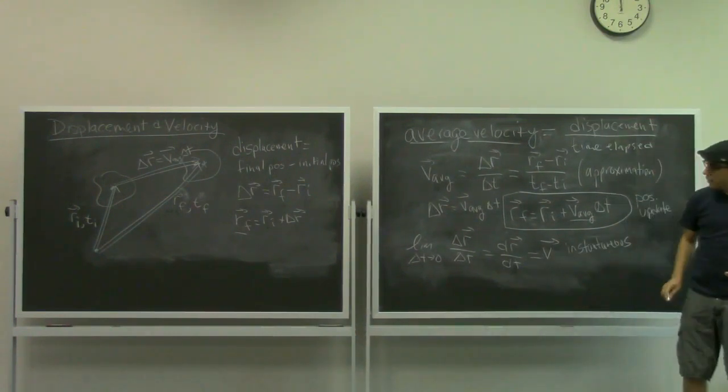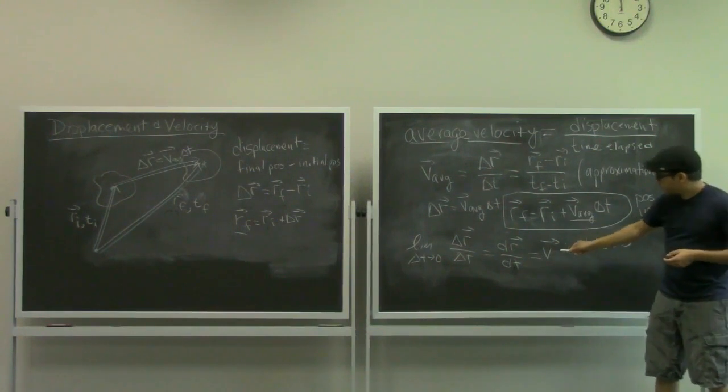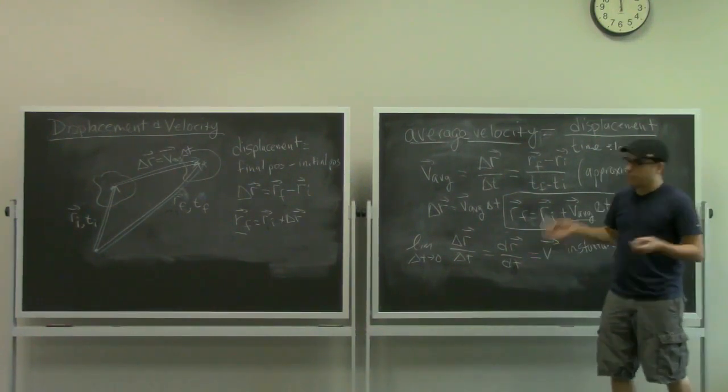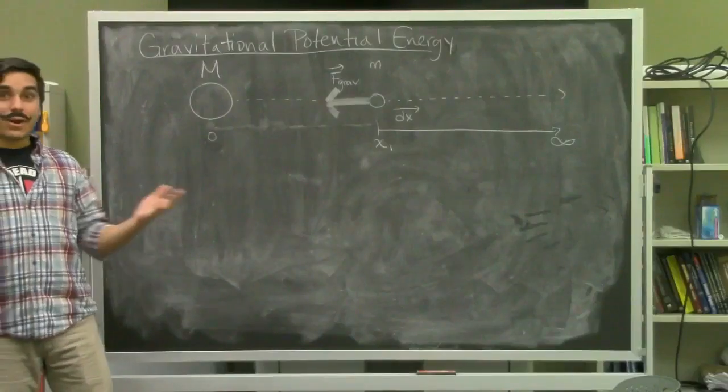Which we just denote as V. So this velocity is... I don't know what I'm going to say now. I got lost there.